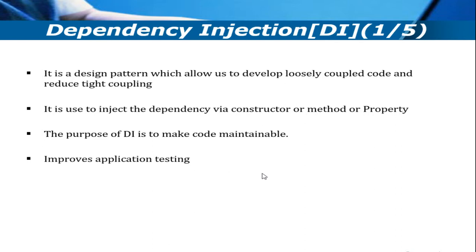Dependency injection is a very important design pattern which allows us to develop loosely coupled code and reduce tight coupling. It is used to inject the dependency via constructor, method, or property. Using DI we can make our code more maintainable and it improves your application testing.